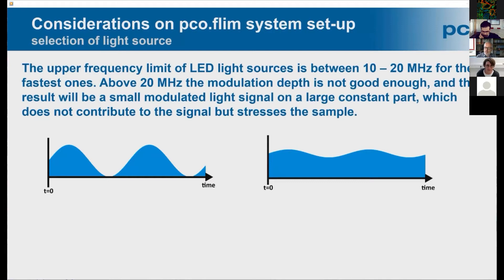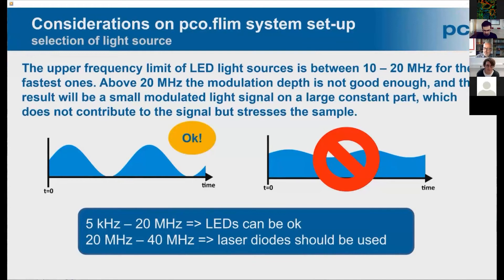The problem with this is that most of the light, if you have a light source that has such a poor modulation depth, is wasted. It just burns and bleaches the samples without getting any useful information. Therefore, we suggest if you have to measure fluorescence lifetimes in the nanosecond range, then modulation frequencies between 20 to 40 MHz are required, and for that purpose only lasers are an adequate excitation light source. Below that, if you have lifetimes in the range of 10 to 100 nanoseconds or even in the microsecond range, then you very efficiently can use LEDs as light sources.